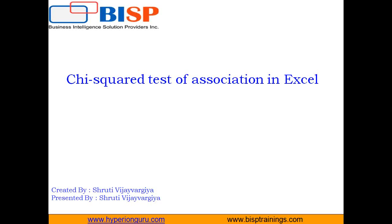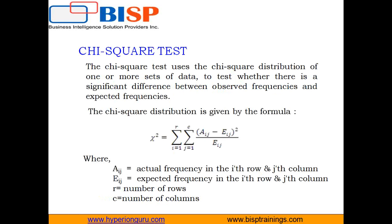The chi-square distribution is commonly used to make inferences about a population variance. If a population follows the normal distribution, you can draw a sample of size n and form the sum of the squared standardized scores, which is chi-square. This random variable follows the chi-square probability distribution with n degrees of freedom, where n equals n minus 1. The degrees of freedom parameter determines the shape of the distribution — with more degrees of freedom, the skew is less.